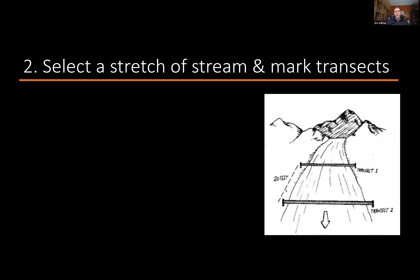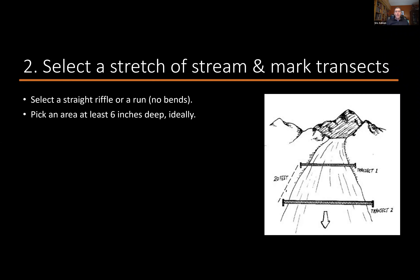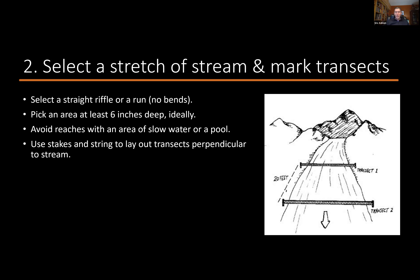For site selection, generally choose either a straight riffle or a run. Avoid going around a bend because whether your float hits the outside or inside of the curve can affect the speed. Ideally you want water at least six inches deep with a relatively consistent flow — avoid slow sections or pools. Lay out your transects perpendicular to the stream. Typically the upstream and downstream points are set about 20 feet apart.